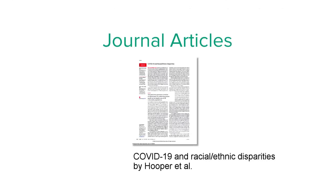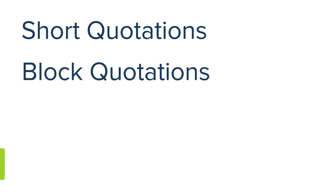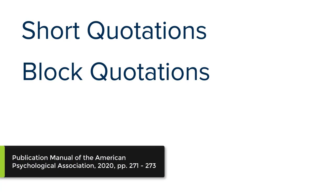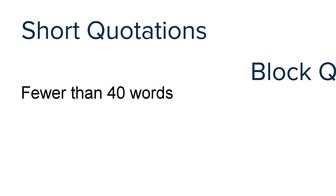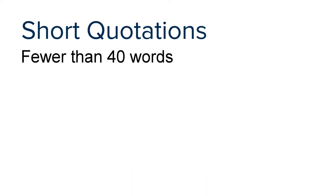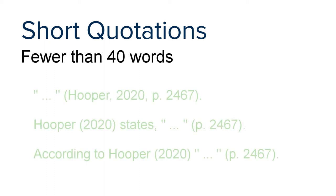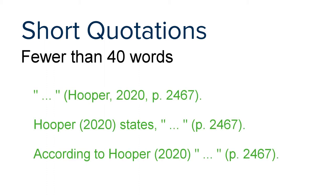Let's use the journal article entitled 'COVID-19 and Racial Ethnic Disparities' by Hooper and others. Let's first consider quotations. Direct quotations are useful for citing information that requires accuracy, like quoting data, definitions, or other observations that need exact wording. Short quotations consist of fewer than 40 words. They are formatted with quotation marks for the text you cite. Here are some examples using parenthetical and narrative in-text citations.